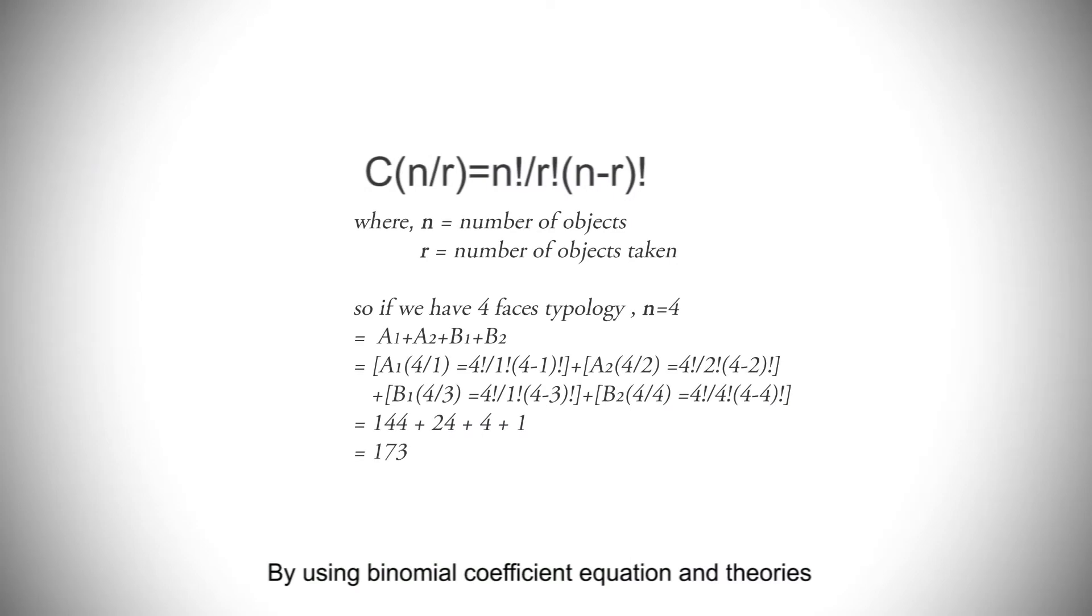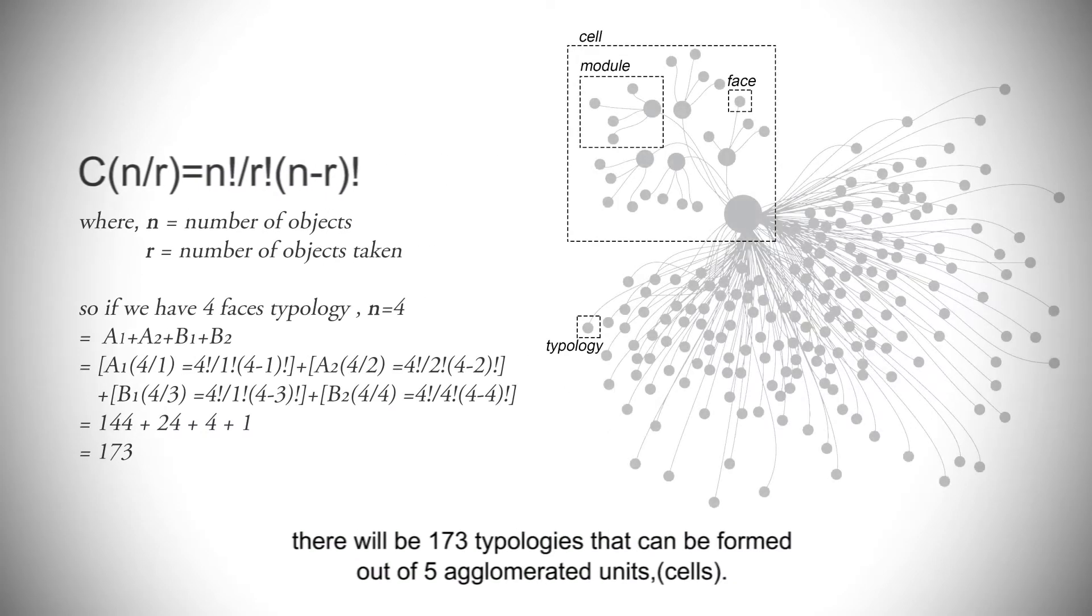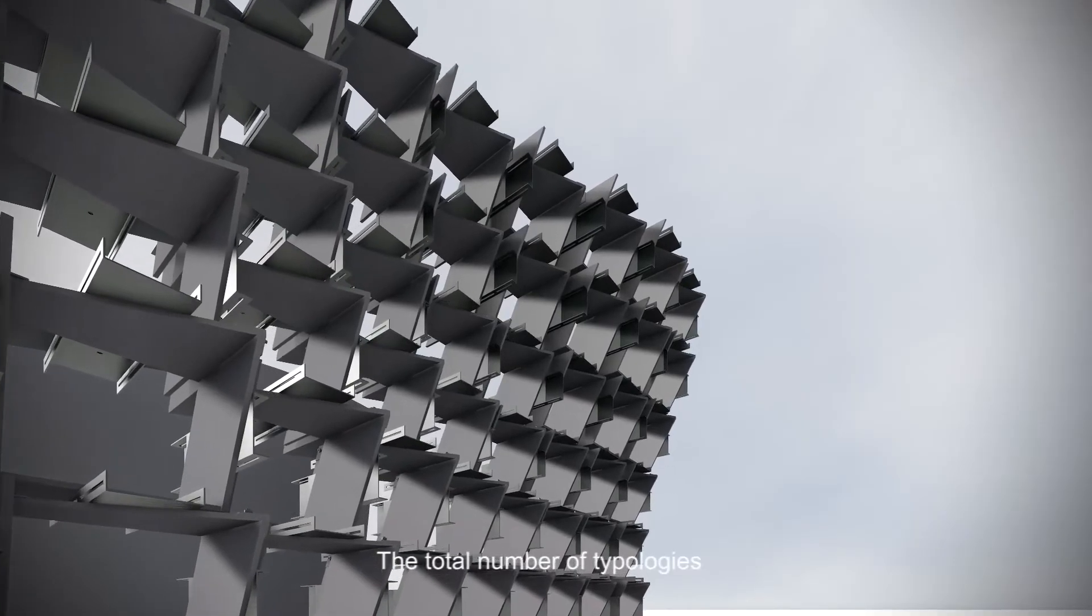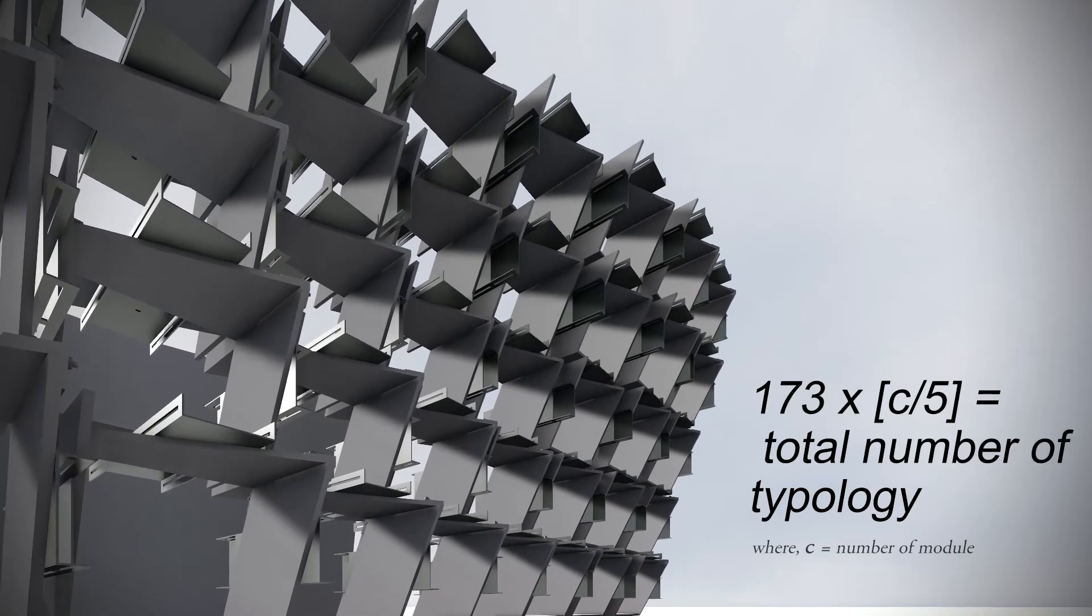By using binomial coefficient equation and theories, there will be 173 typologies that can be formed out of five agglomerated units which are called cells. The total number of typologies can be calculated by using this equation where C is the number of modules.